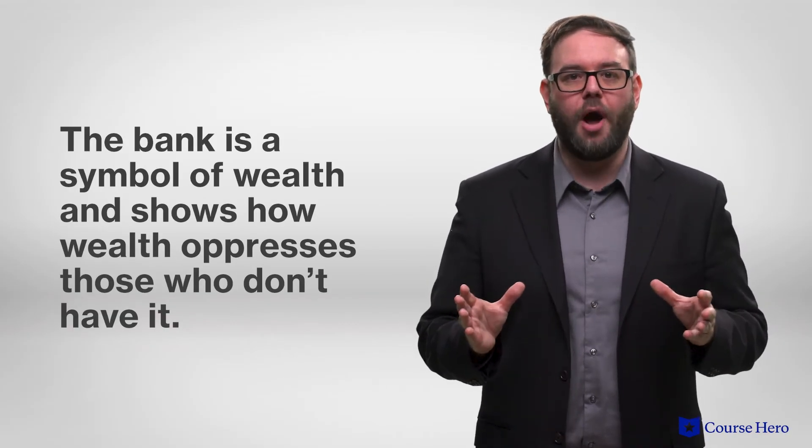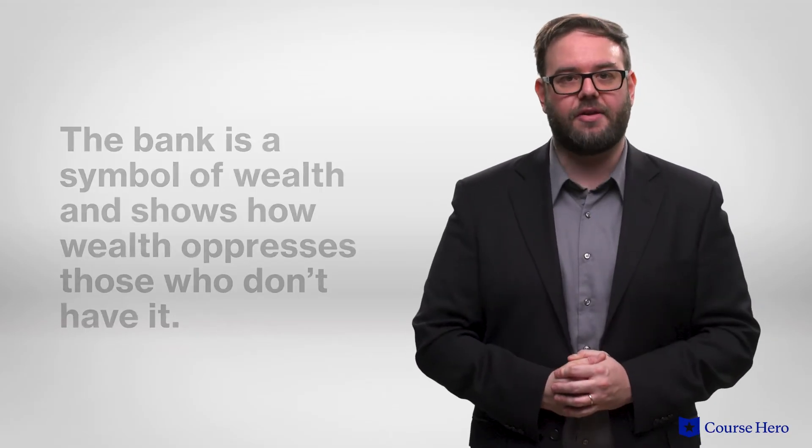In stark contrast to the haphazard whimsy of the circus, the bank is a regimented and organized space, cleaner than the factories, but dismal and restrictive in its own way. Set up in rows that echo the rows of machines in a factory, Tom Gradgrind finds his place in the bank as oppressive as Stephen Blackpool finds the factory. As a symbol of wealth, the bank shows how wealth oppresses those who don't have it. A nondescript but imposing brick structure, the bank is inaccessible to those who do not have money, and thus serves as a physical reminder of what people living in poverty can never obtain.